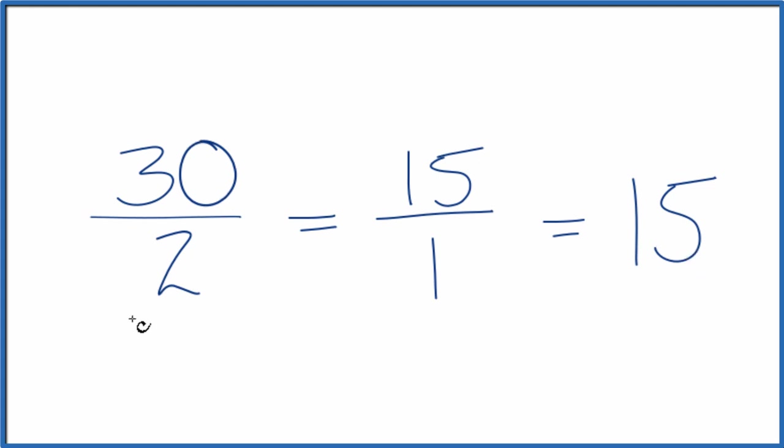Note that this is considered an improper fraction because the numerator is larger than the denominator. So really, all we're doing is dividing 30 by 2, and that gives us the whole number 15.